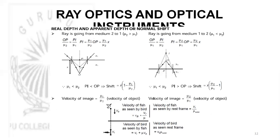The refraction phenomena includes the real depth and apparent depth concept, or normal shift. Whenever an observer in a rarer medium observes an object in a denser medium, there is an apparent shift in the position of the object called normal shift. The formula gives PI = (mu1/mu2) * OP. When the ray goes from medium 1 to medium 2, PI = (mu2/mu1) * OP. The bird and fish problem is famously solved using this method, where velocity of the image is mu2/v1 and mu1/v2 respectively.